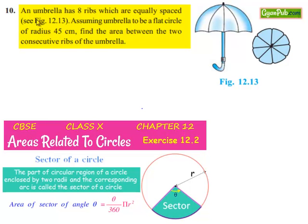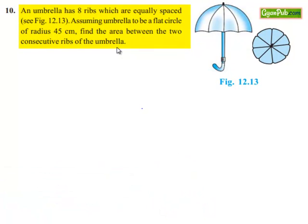Moving on to the 10th question. An umbrella has 8 ribs which are equally spaced. Assuming the umbrella to be a flat circle of radius 45 centimeters, find the area between two consecutive ribs of the umbrella.